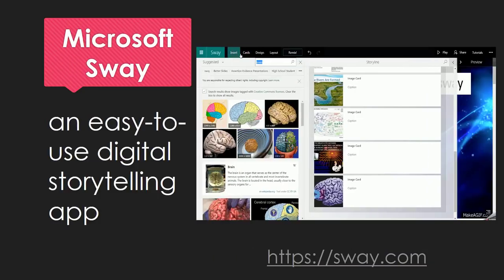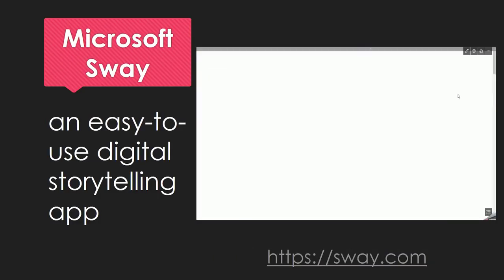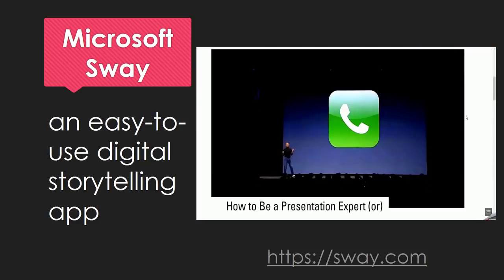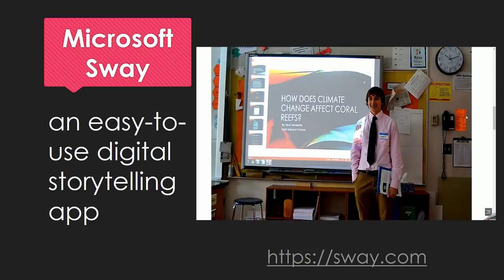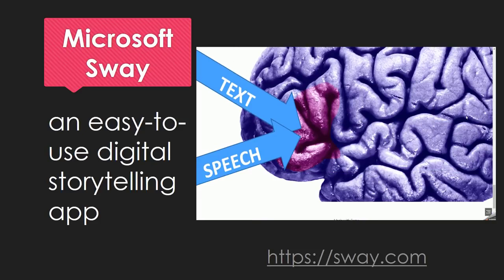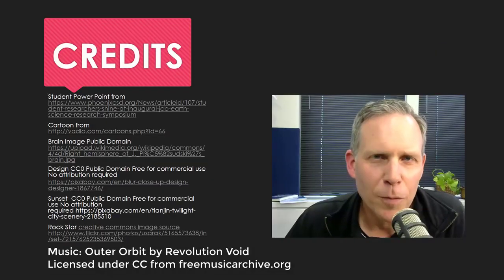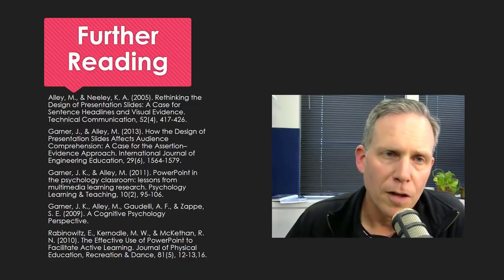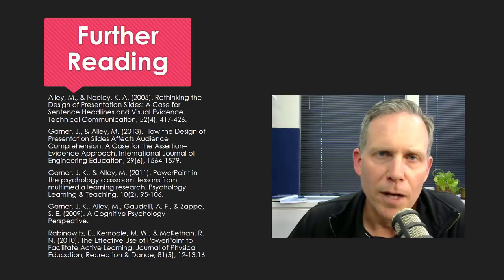Last, Microsoft has come out with something called Sway — an easy-to-use digital storytelling app that looks very modern. It even includes a way to search Creative Commons images from inside the web-based app. It's part of Office 365, so most institutions have this. I hope you've enjoyed this presentation. Please let me know if you have any questions or comments. You can see the image credits here, along with references for further reading. Now go out there and make some great presentations.